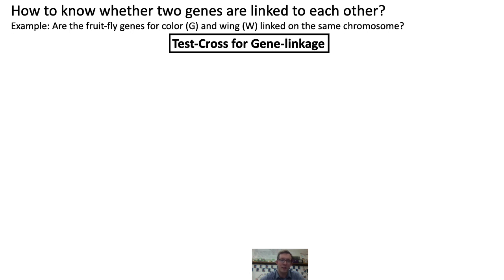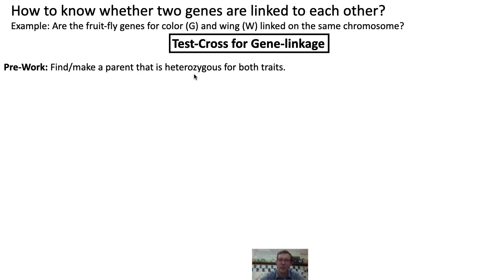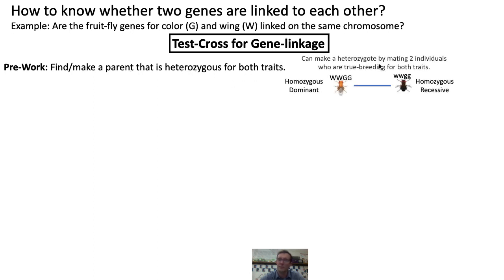The only thing you need for a test cross is a parent fly that is heterozygous for both traits. To find a heterozygous fly, biologists will oftentimes make one for themselves — they'll take two true-breeding parents: a parent that is homozygous dominant for both traits, and a parent that is homozygous recessive for both traits, and cross those two parents together. They know that all offspring of those two parents will be heterozygous, because the offspring gets dominant alleles from one parent and recessive alleles from the other.